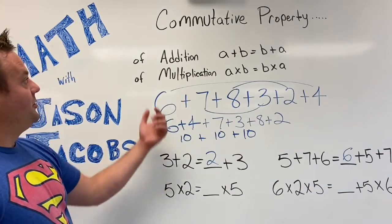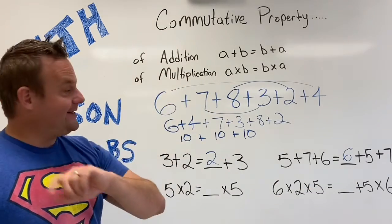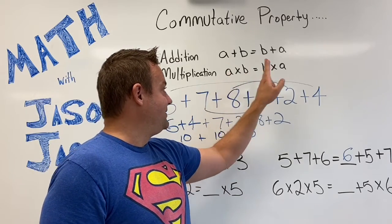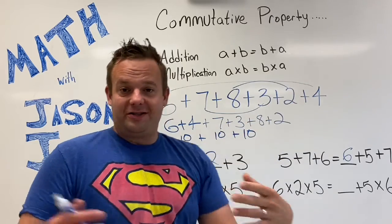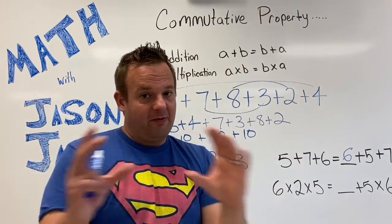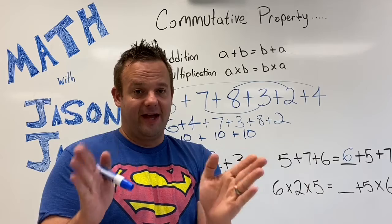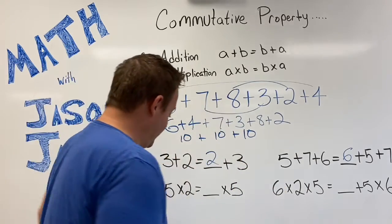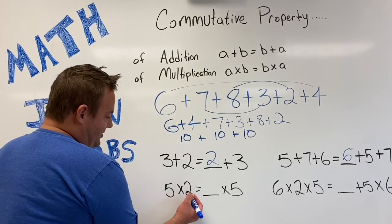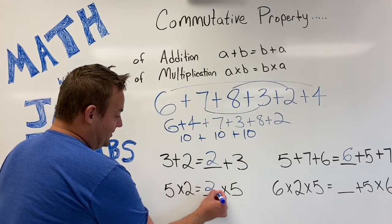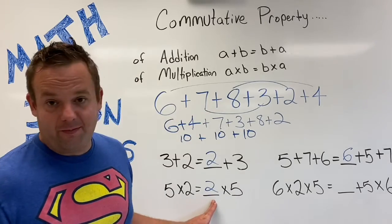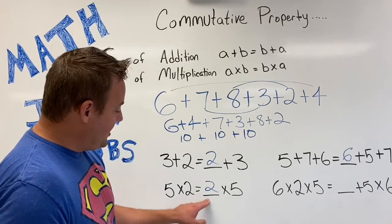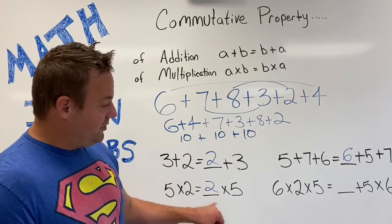Now let's do the Commutative Property of Multiplication. That states: A times B is the same as B times A. So as long as it's all multiplication, you can rearrange the factors so that it can be done easier, similar to what I did with the Commutative Property of Addition. So five times two is the same as two times five. A common mistake is that some of you might put 10 there — that would be wrong. Five times two is the same as two times five.